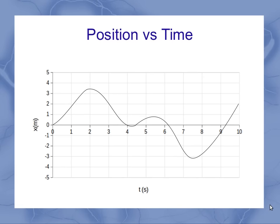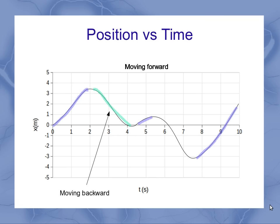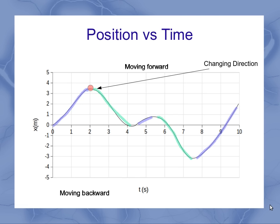If you've got a curved line for your position versus time graph, we can still understand all these same things. Any time we've got a slope upwards, even if it's a curving slope, we're moving forward — and we see that for all three of these segments here. Slope downwards means you're moving backwards. These places where the curve flattens out is where we've gone from moving forward to moving backwards, so you change direction. That's going to happen any time you've got one of these inflection points in the curve.